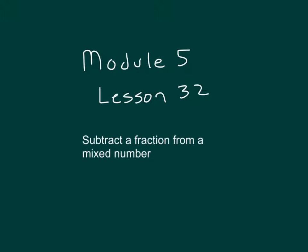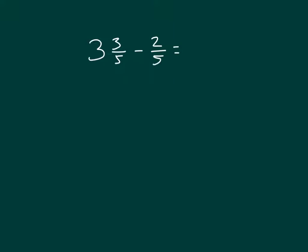The objective is to subtract a fraction from a mixed number. Here we have 3 and 3/5 minus 2/5. Let's go ahead and look at this within unit form.